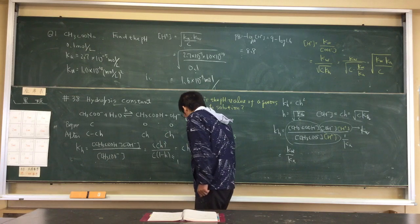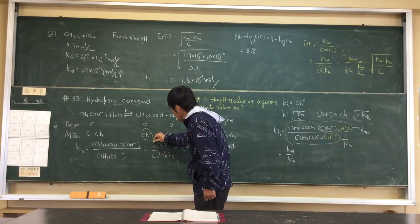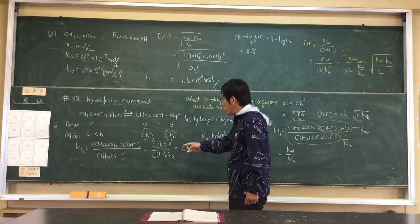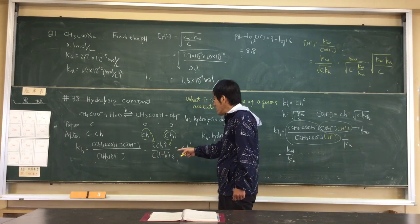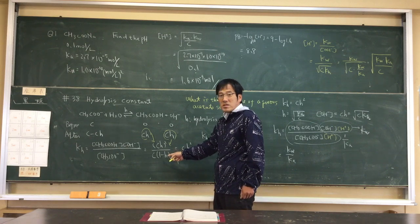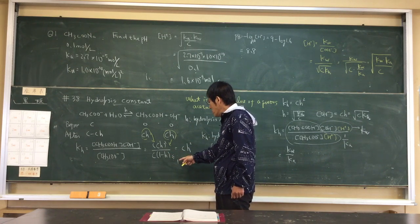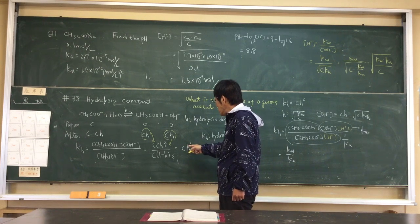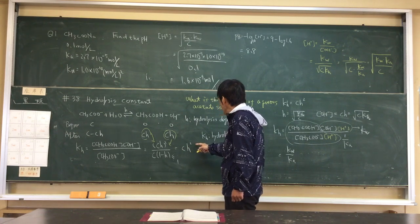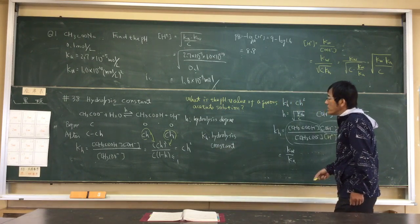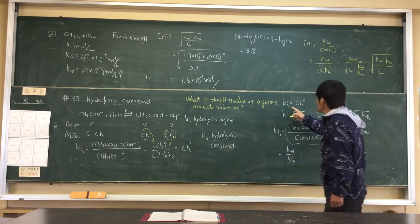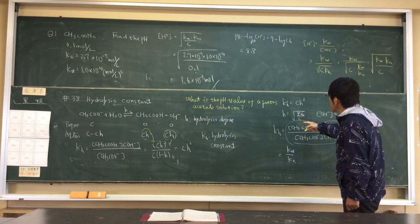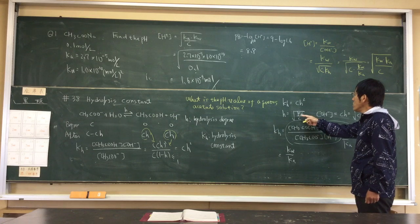Here, KH equals CH squared over C times 1 minus H. 1 minus H nearly equals 1, so KH equals CH squared over C. Therefore, H equals the square root of KH over C.